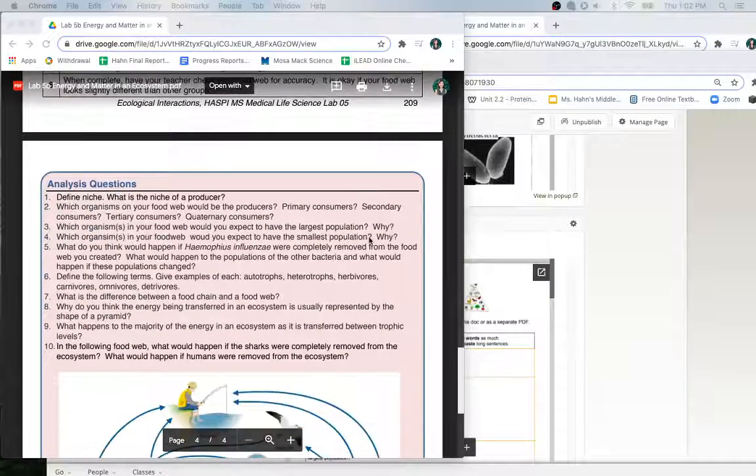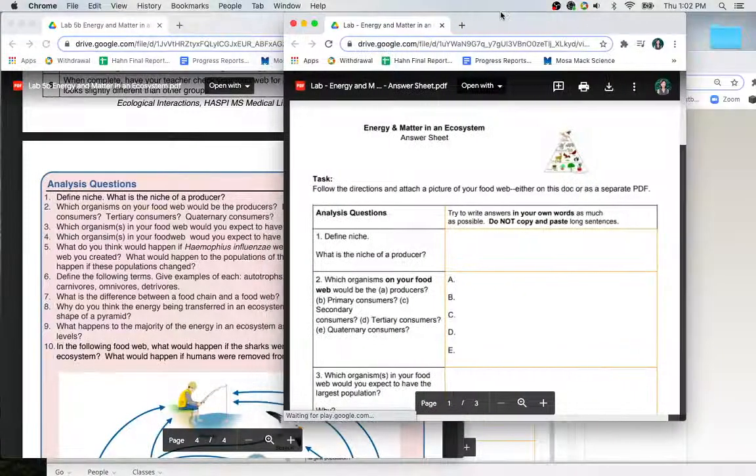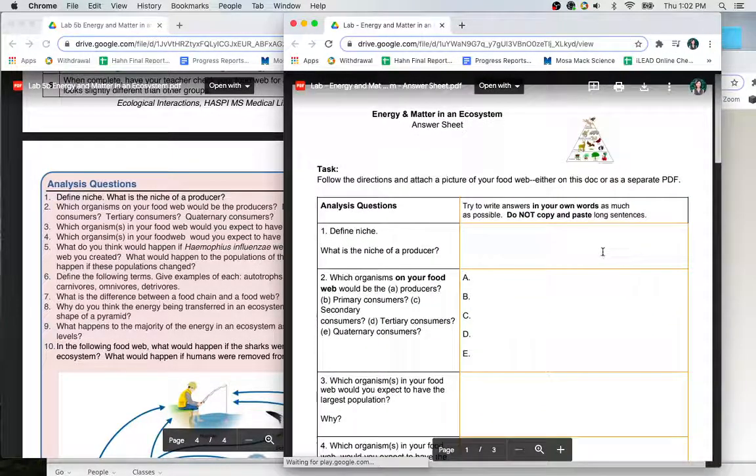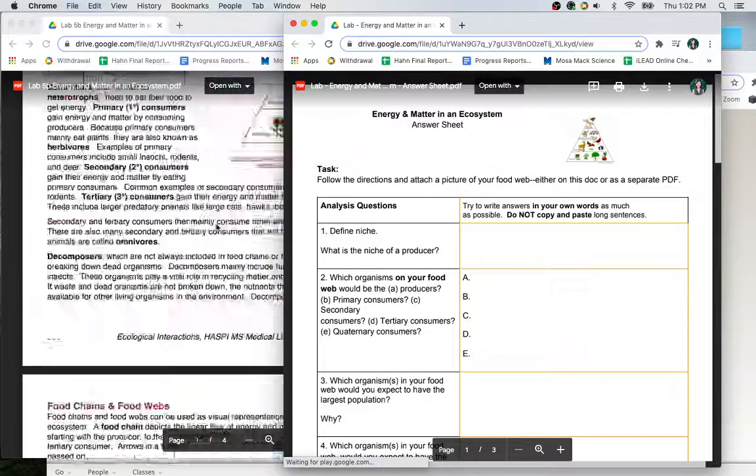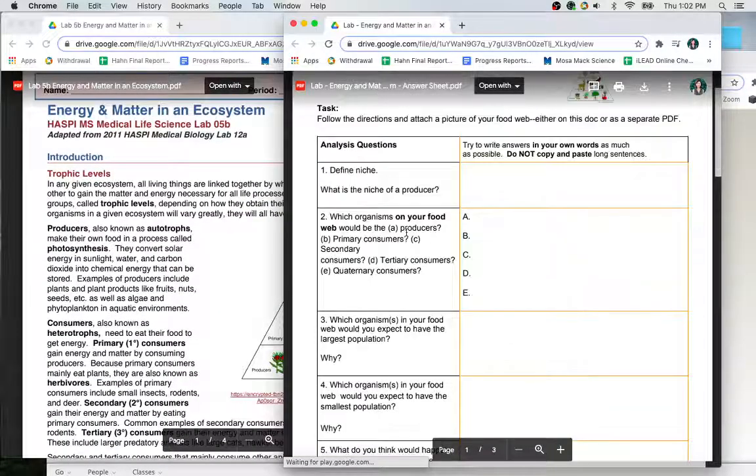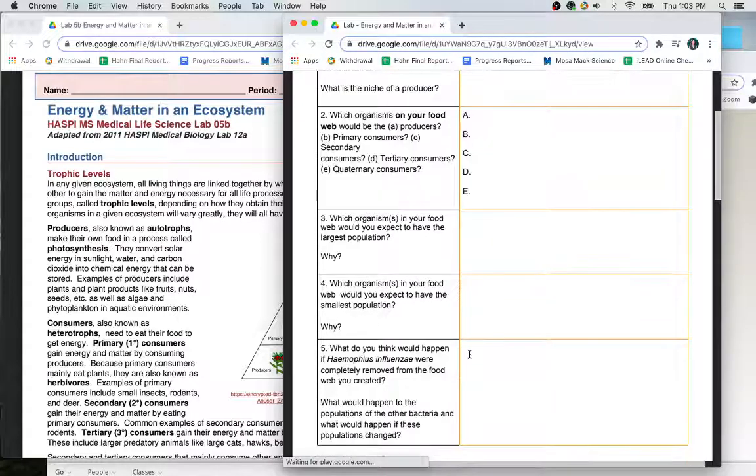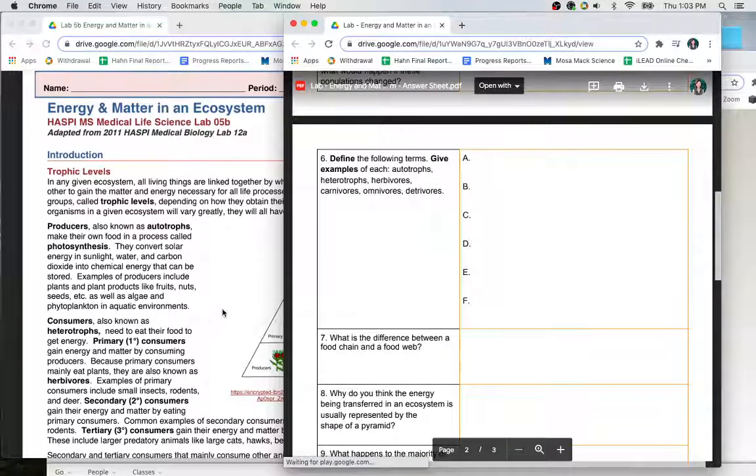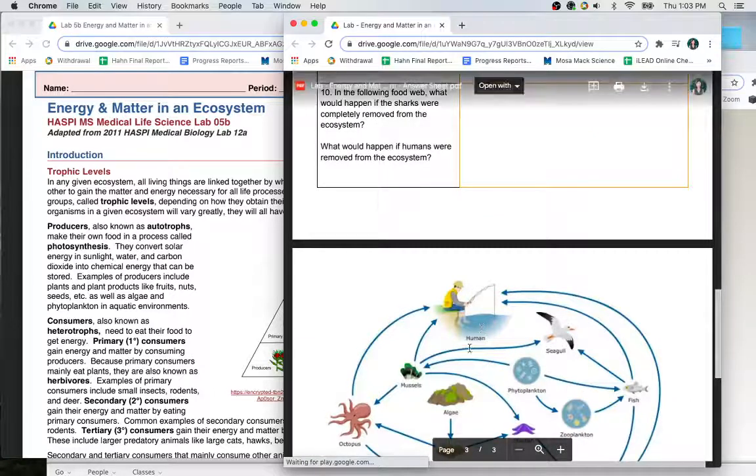Here are the analysis questions, but again, I would like you to answer them on this PDF or Google Doc. You can write your responses here. This question's answer is in the introduction. These questions are about the food web that you made of the bacteria. Starting with number six and on is going to be coming from the introduction, and the last one is going to be from this food web.